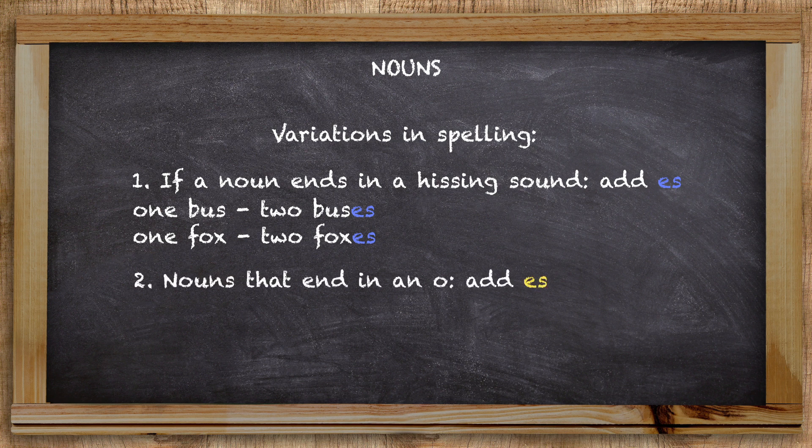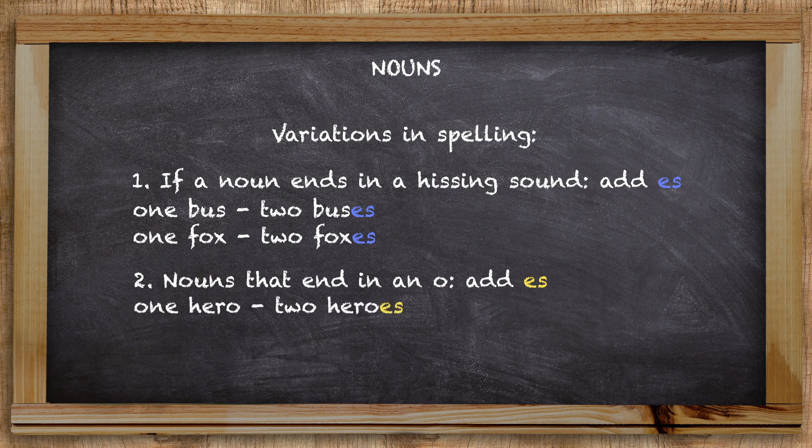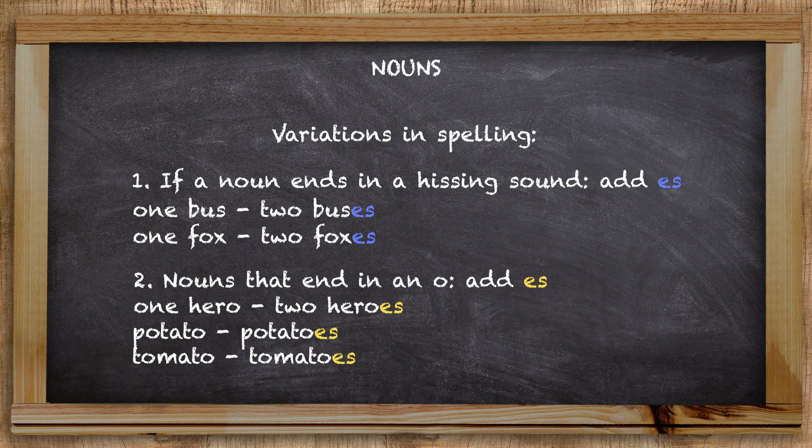Nouns that end with an o also take an added es to the noun. One hero, for example, will become two heroes when made plural. The same goes for potato or tomato which become potatoes and tomatoes.